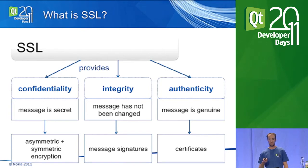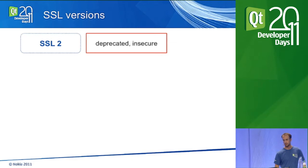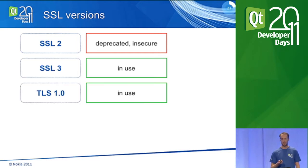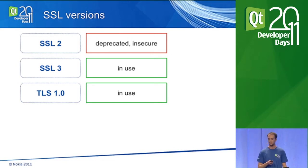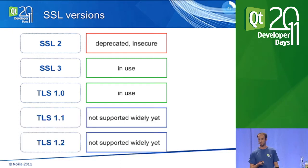About SSL versioning: there are several different versions. The oldest is SSL 2, which is deprecated and considered broken — please don't use it. Several Linux distributions have it disabled. The versions you're supposed to use, which browsers and many applications use, are SSL 3 and TLS 1.0. There are also newer versions: TLS 1.1, which is not yet widely supported, and TLS 1.2.